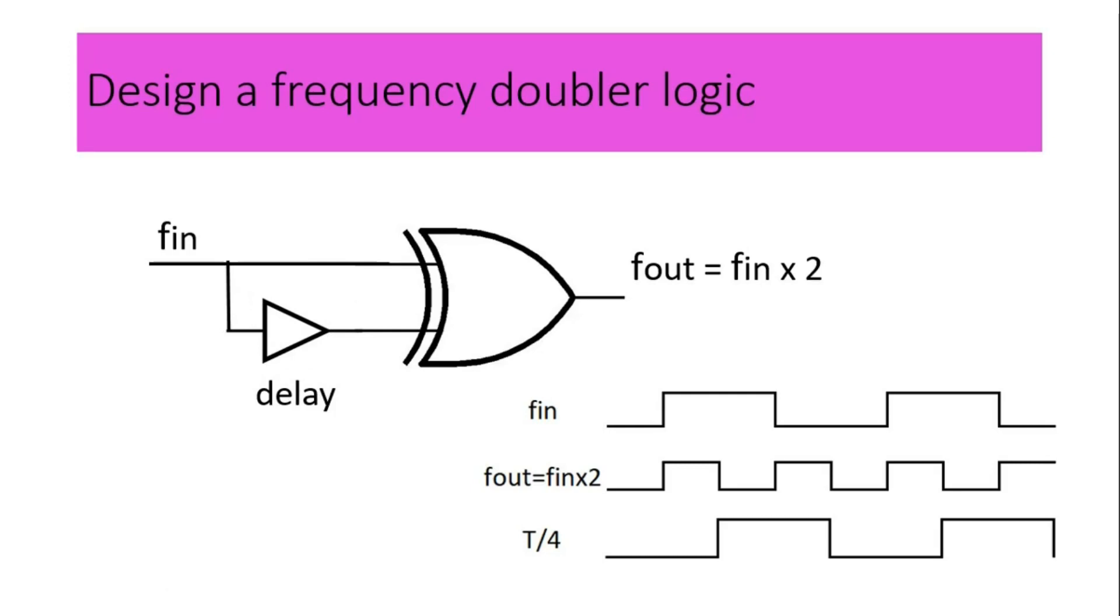Now in this example, where we want the f_out signal to have 50% duty cycle and its frequency should be multiplied by 2 as compared to the input clock frequency, the delay value should be very precisely equal to T/4 where T is a time period of f_in signal. But because of process variations and some other parameters in the manufacturing process, we cannot control this delay very precisely.